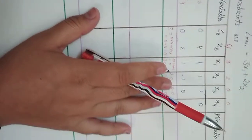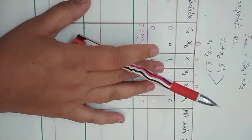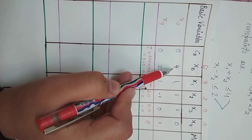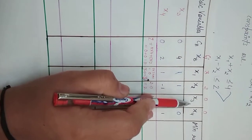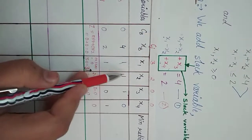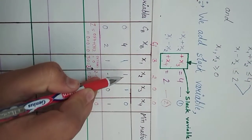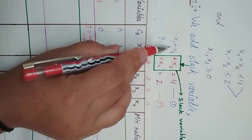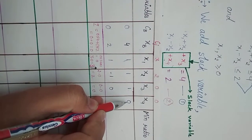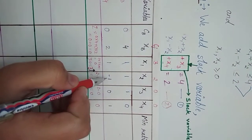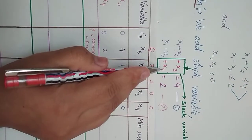The cost for x3 is 0 and for x4 is also 0. The xb values are 4 and 2. Now we write the coefficients of x1, x2, x3, x4 from the equations: for the first row, x1 coefficient is 1, x2 is 1, x3 is 1, x4 is 0 (absent). For the second row, x1 is 1, x2 is minus 1, x3 is 0 (absent), x4 is 1.